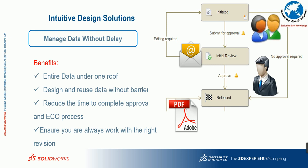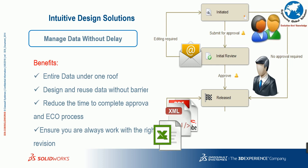Once the design is approved and released to manufacturing or other teams, you can automate this process. Once it crosses the design team stage, PDFs are automatically pushed to the manufacturing or production team. You can incorporate PDF, XML, Excel, and many other file formats into your automatic workflow, so you can access all your data in a single area. It's a one-stop solution for design collaboration and accessing the right CAD files at the right time.